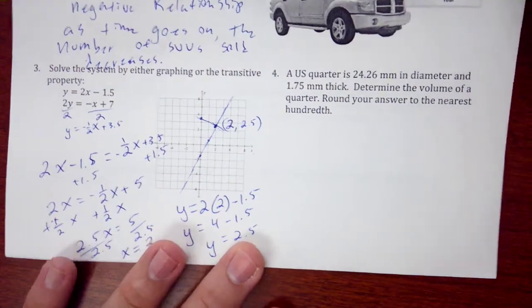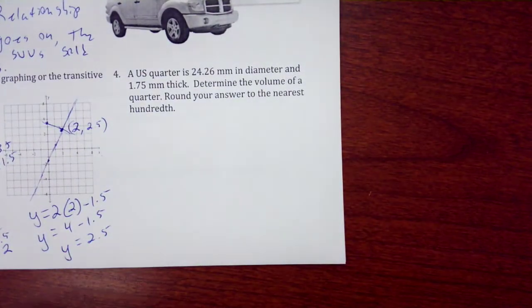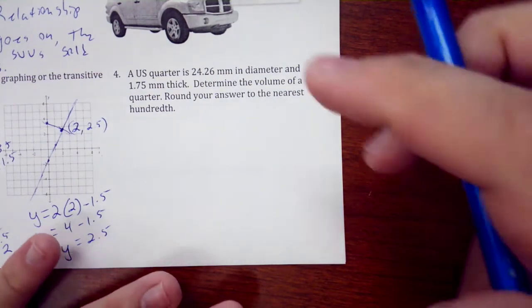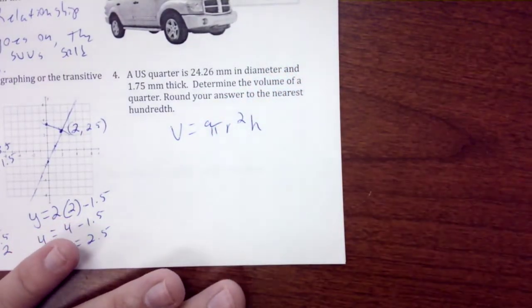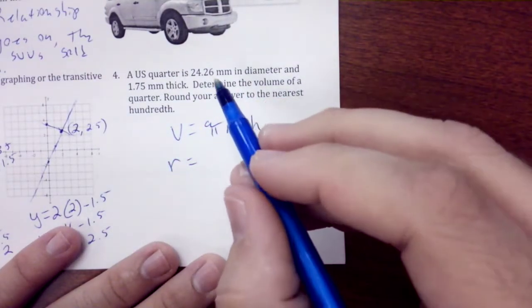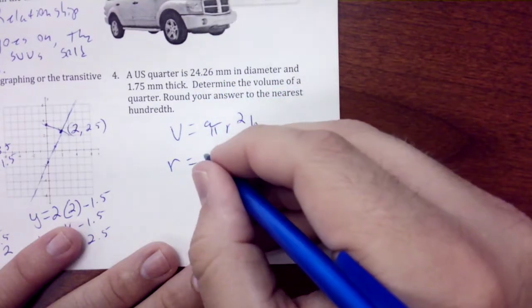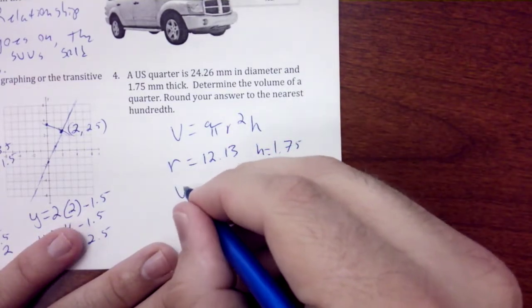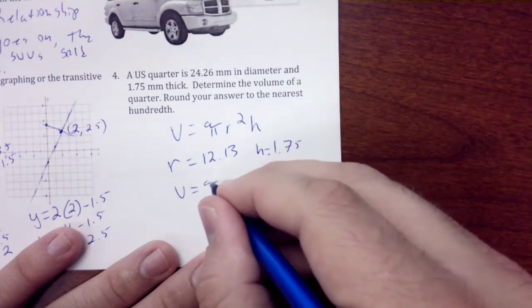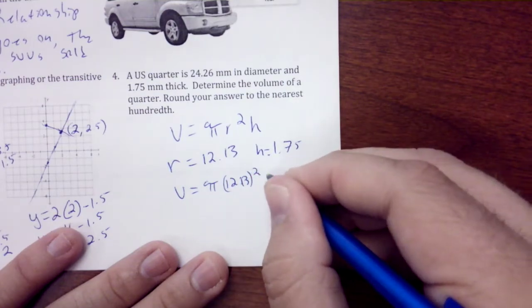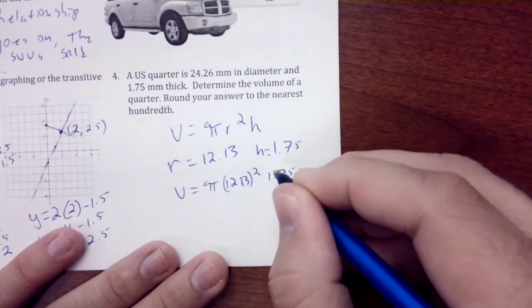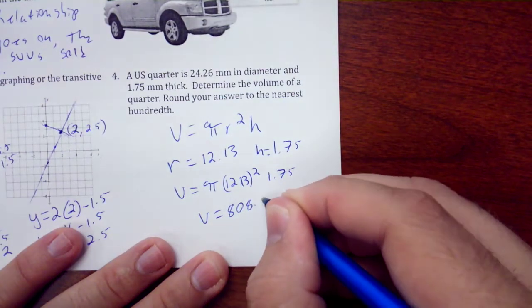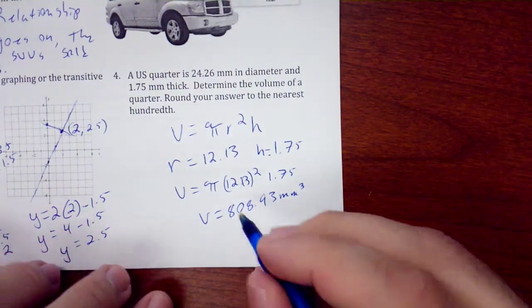Number 4: A US quarter is 24.26 mm in diameter and 1.75 mm thick. Determine the volume of a quarter. Round your answer to the nearest hundredth. We have volume = πr²h. Our diameter is 24.26, so our radius would be 12.13. Our height is 1.75. We get a volume of 808.93 mm³, and that would be our answer.